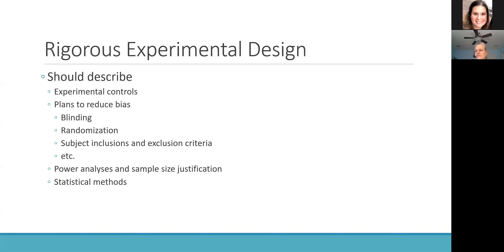We can then think about clearly laying out our power analysis and sample size justification, which should indicate that the study is going to be successful in identifying what's known as a relevant difference. We want to set up our sample size and power analysis to say here's the difference we want to detect, and we need this many animals, people, or replicates to be able to achieve that. We also need to describe the statistical methods, which all goes into helping ensure we're conducting our experiment in a rigorous way.